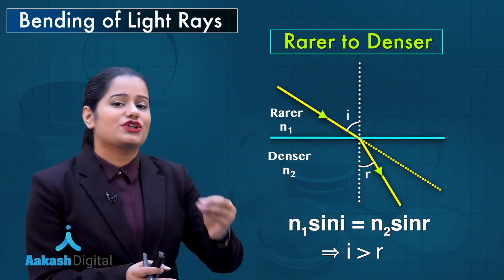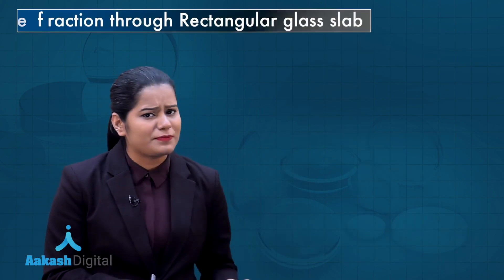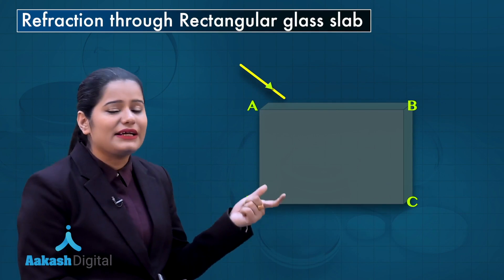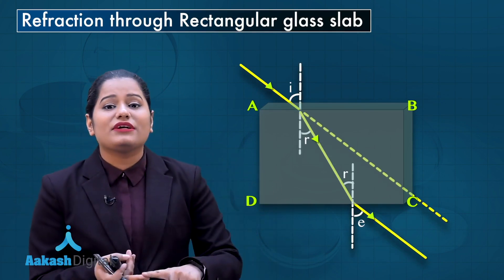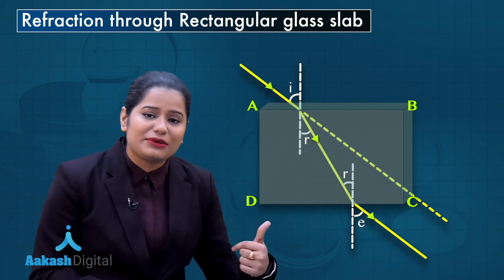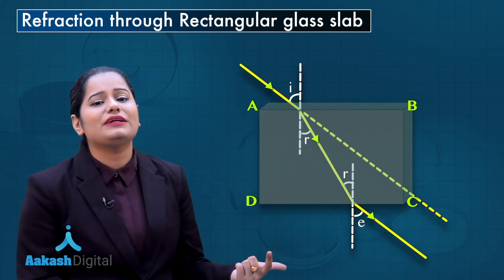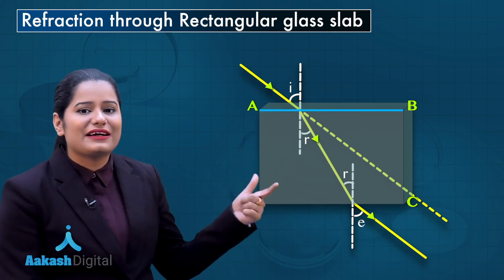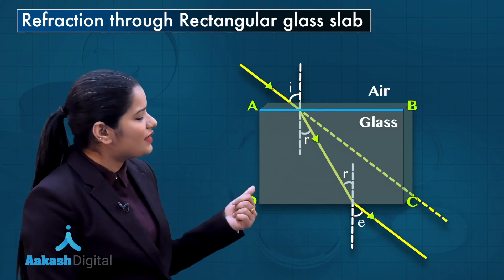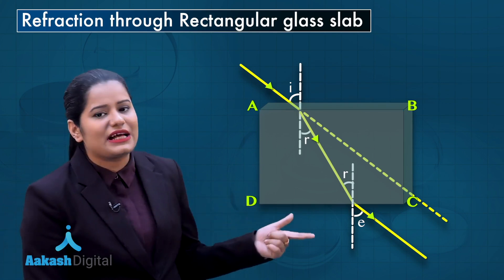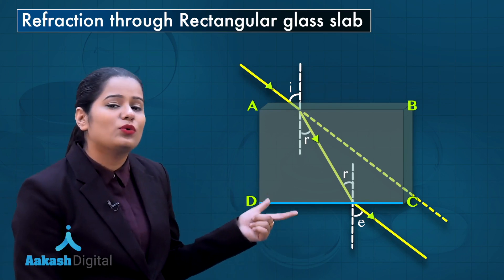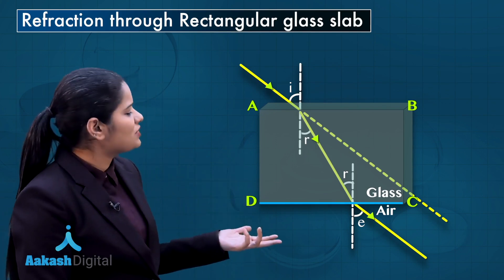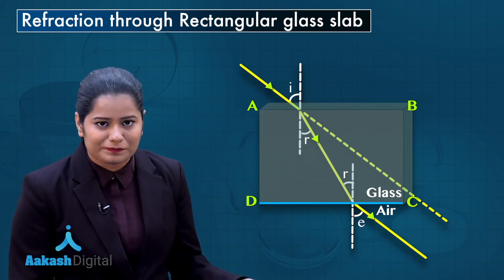Now we will talk about the refraction of light through a rectangular glass slab ABCD. A light ray strikes the glass slab at surface AB, traveling from air to glass. Since air is rarer and glass is denser, it bends towards the normal at the air-glass interface. At surface CD, the light goes from glass to air — from denser to rarer — so drawing the normal, it bends away from the normal.